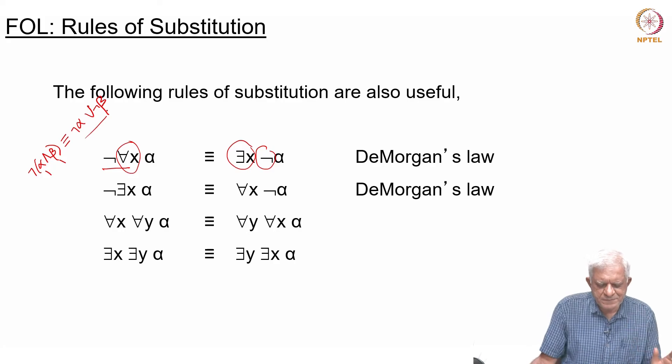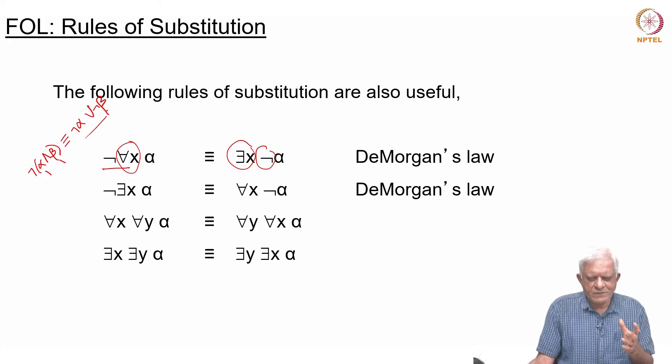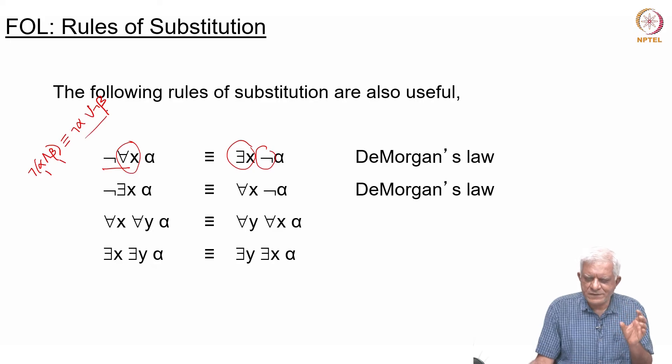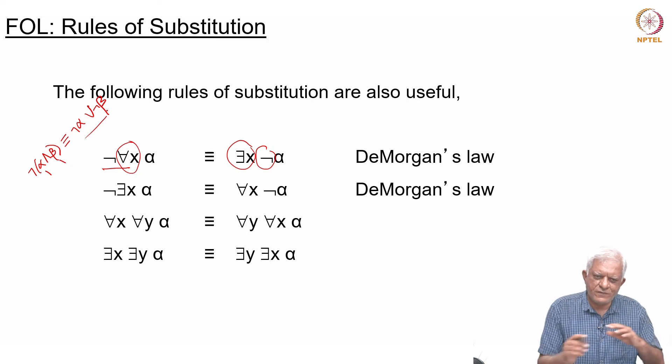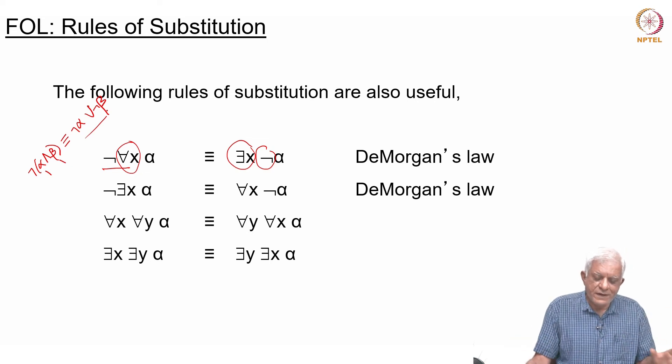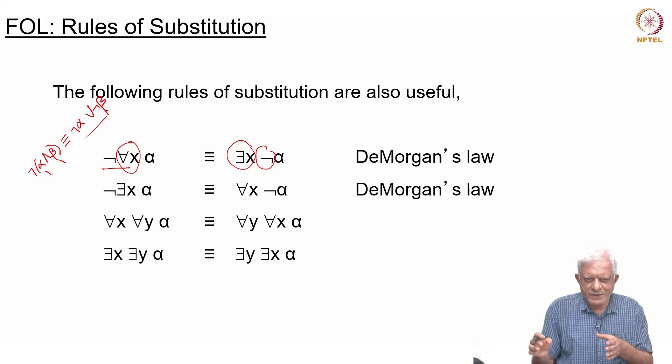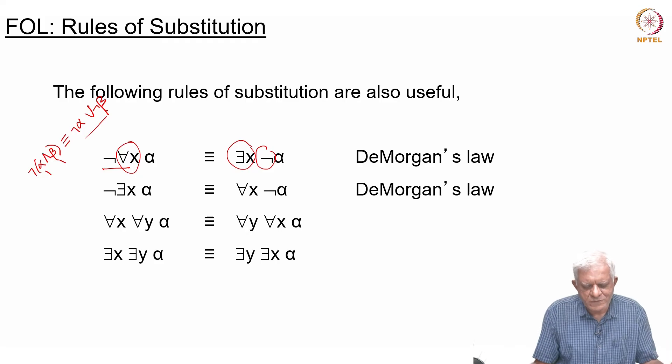One way to think about first-order logic is to think of the for-all quantifier as a kind of universal connective: a and b and c and d and e, up to for every element of the domain. And the existential quantifier is like a disjunct essentially: a or b or c or d. At least one of them must be true for a or b or c or d to be true.